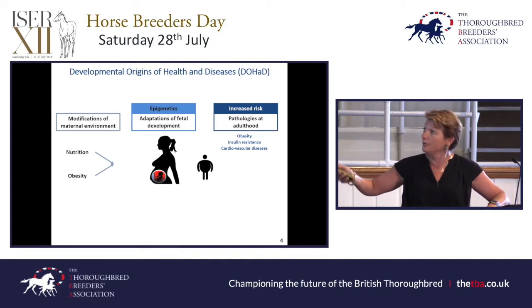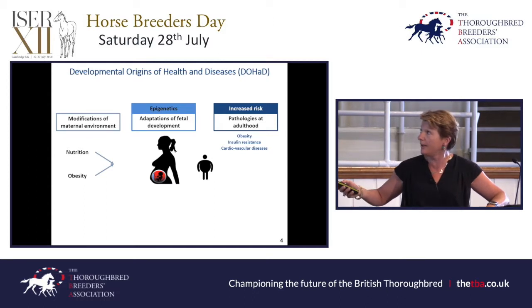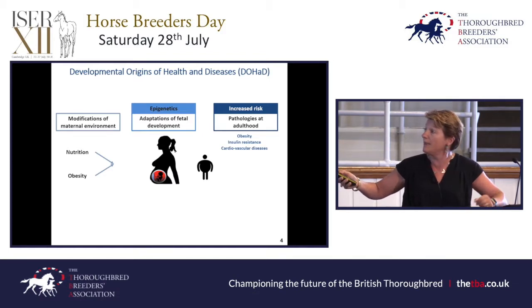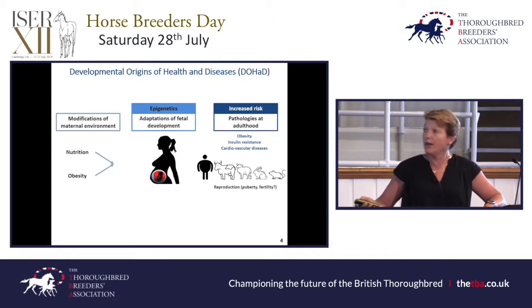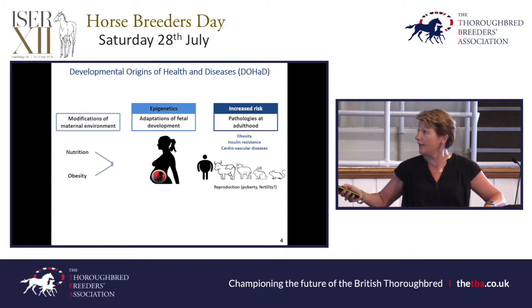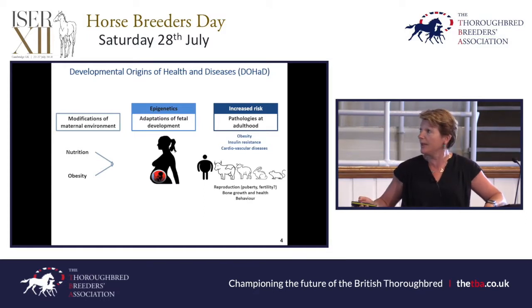The problem is that these adaptations made through epigenetics will last, and will lead to things seen in the offspring when they are adults. In humans, this is part of the reasons for the epidemic of obesity, insulin resistance, diabetes, and cardiovascular disease. We now know it affects all types of animals, and it can also affect reproduction, puberty and fertility, bone growth and health, and behavior.